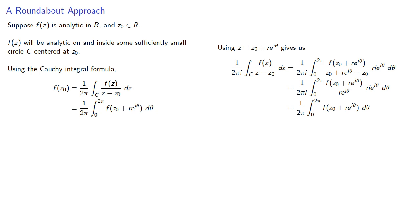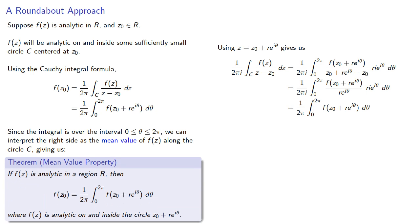Well, let's look a little closer. Since the integral is over the interval between 0 and 2 pi, we can interpret the right side as the mean value of our function along the circle c. And this gives us the following. And we might call this the mean value property, though there's no standardized name for this result.